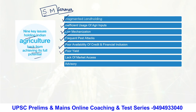Poor yield is another problem because without efficient agriculture inputs and proper mechanization, yield is obviously affected. Lack of market access is also a problem. And advisory — for example, in Andhra Pradesh, we have something called Raitu Suraksha Kendras, which give advisories to farmers, but that was one thing not functioning efficiently. These are the nine key aspects you can address when discussing problems in agriculture, as per the World Economic Forum report.